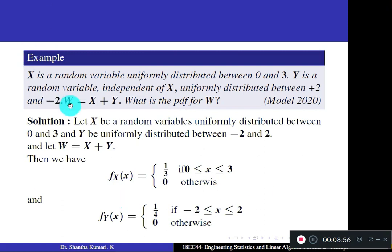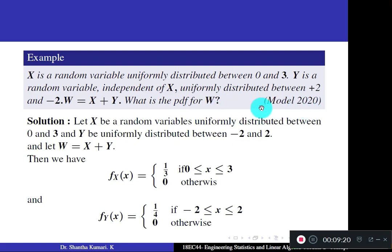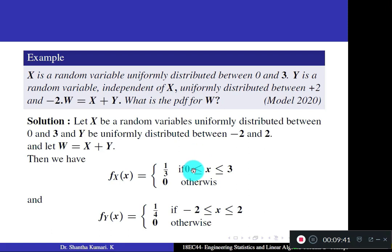Next question: x is a random variable uniformly distributed between 0 and 3. y is a random variable independent of x, uniformly distributed between −2 and 2, and w = x + y. What is the PDF for w? The PDF for x (uniform on 0 to 3) is fx(x) = 1/(b−a) = 1/3 for 0 ≤ x ≤ 3, and 0 otherwise.